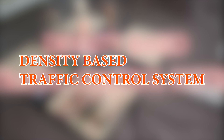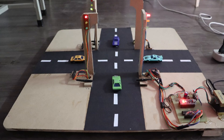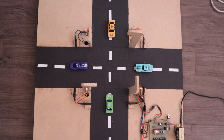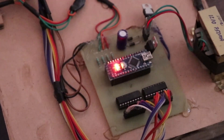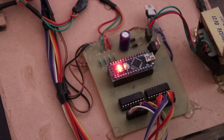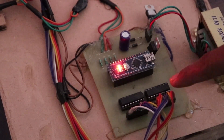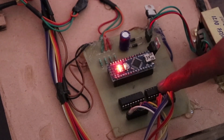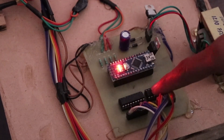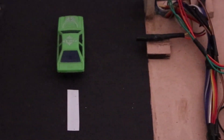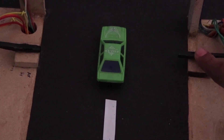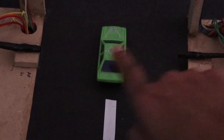This is a very interesting project named Density-Based Traffic Control System. In this project, we are using a transformer for power supply, two driver ICs, an Arduino Nano controller board, sensors, IR transmitter and receiver.